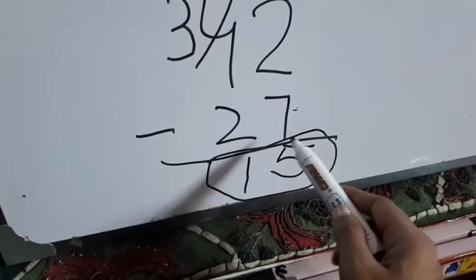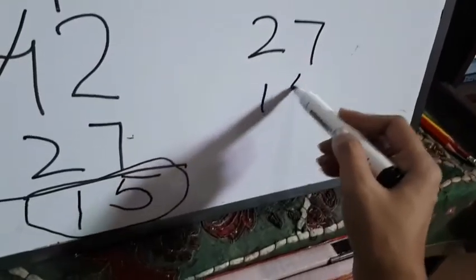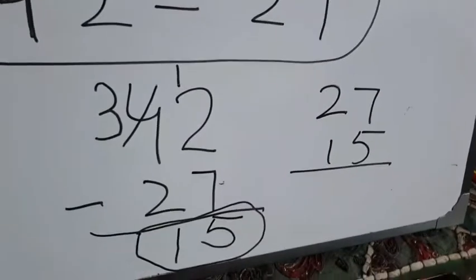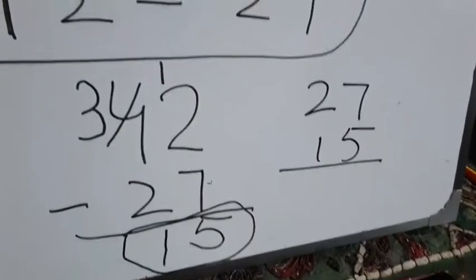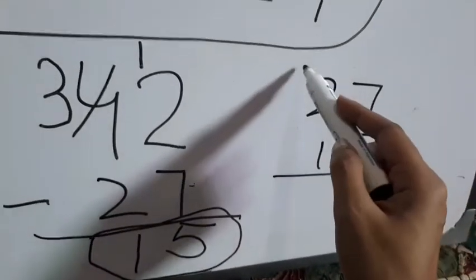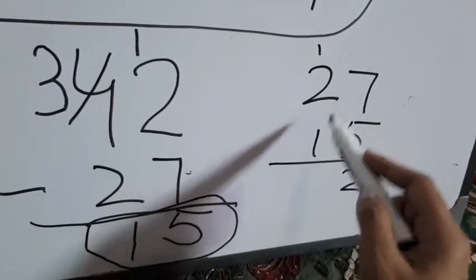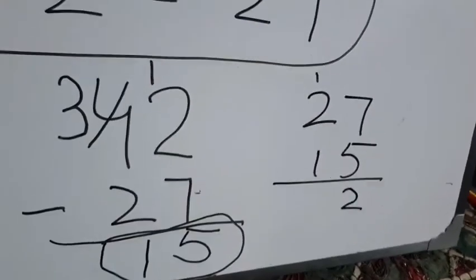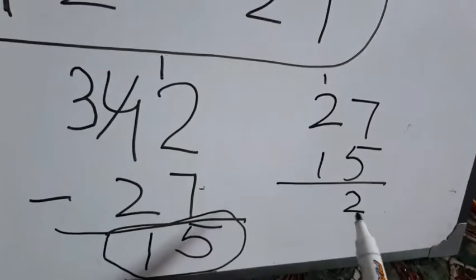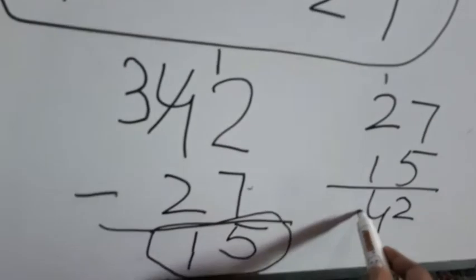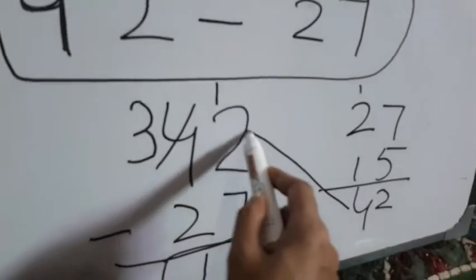Three minus two is one. Now let's check if you did it right or wrong — add the two smaller digits: 27 and 15. Seven plus five is twelve, carry one. One plus two plus one equals four. Your answer is 42, which is right.